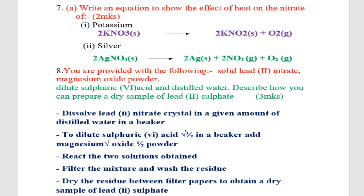Question eight: Describe step by step how to prepare a dry sample of lead sulfate. Step one: dissolve lead nitrate crystals in distilled water in a beaker. Step two: add dilute sulfuric acid and magnesium oxide powder. Step three: react the two solutions obtained. Step four: filter the mixture and wash the residue. Last step: dry the residue between filter papers to obtain a dry sample of lead sulfate.